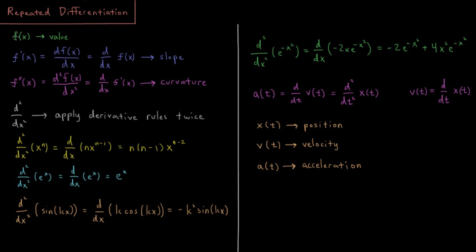So that gives us: f gives us information on the value of the function, f' gives us information on its slope, and then a function which we'll call f'' gives us information on its curvature. So this is the second derivative with respect to x — d²f/dx² — and that's the derivative of f', or the derivative acting twice on our function, giving us information about the curvature of that function.